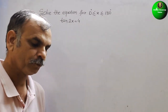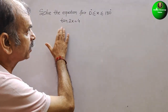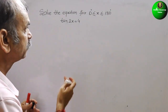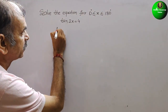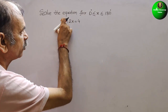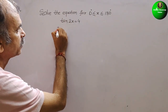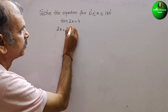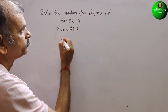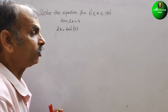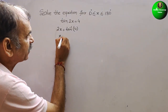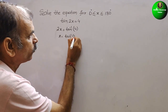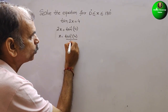How do we solve this? First, we have to convert tan to tan inverse. That means we write: 2x = tan⁻¹(4). So x is nothing but tan⁻¹(4) divided by 2.